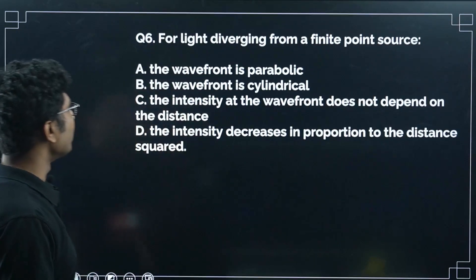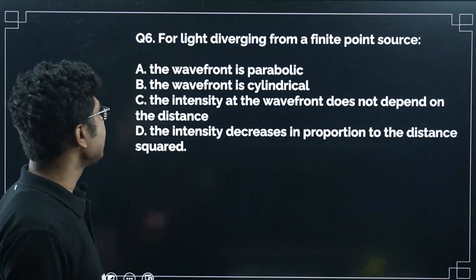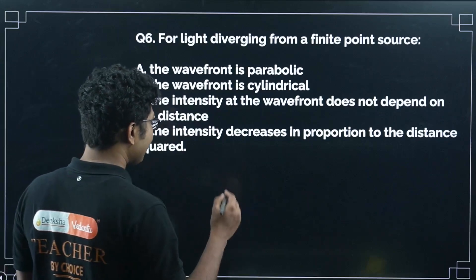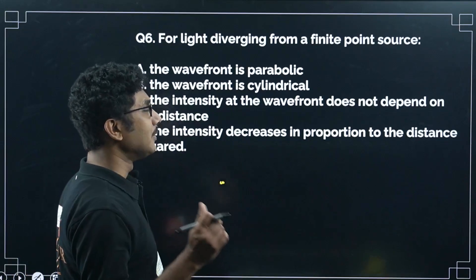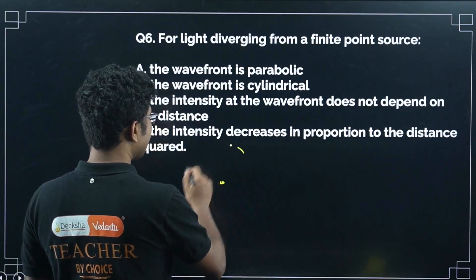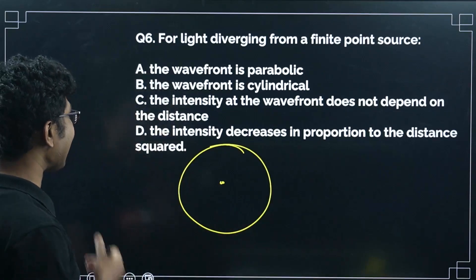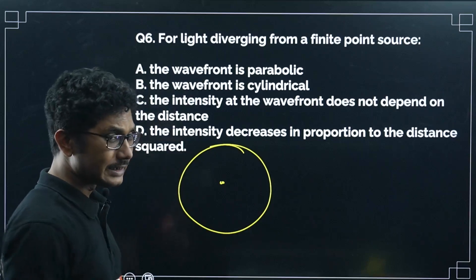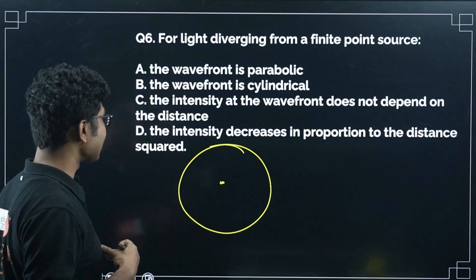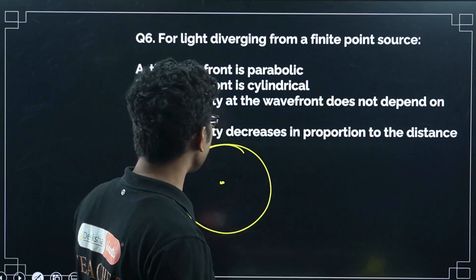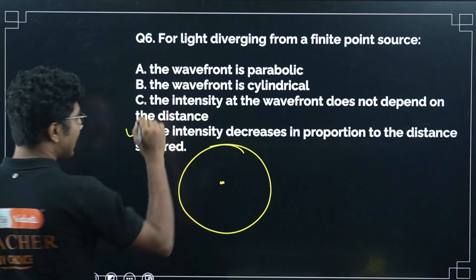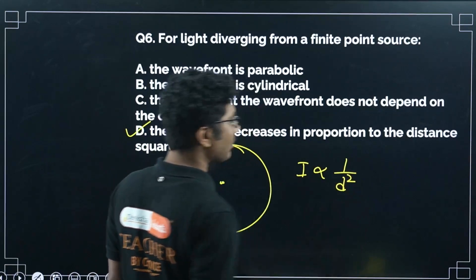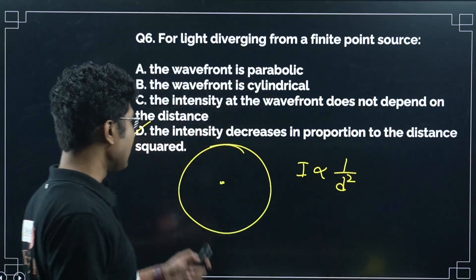For light diverging from a finite point source, the wavefront is spherical — not parabolic or cylindrical. Also, intensity at the wavefront does change with distance; it decreases in proportion to distance squared, meaning it is inversely proportional to the square of the distance.